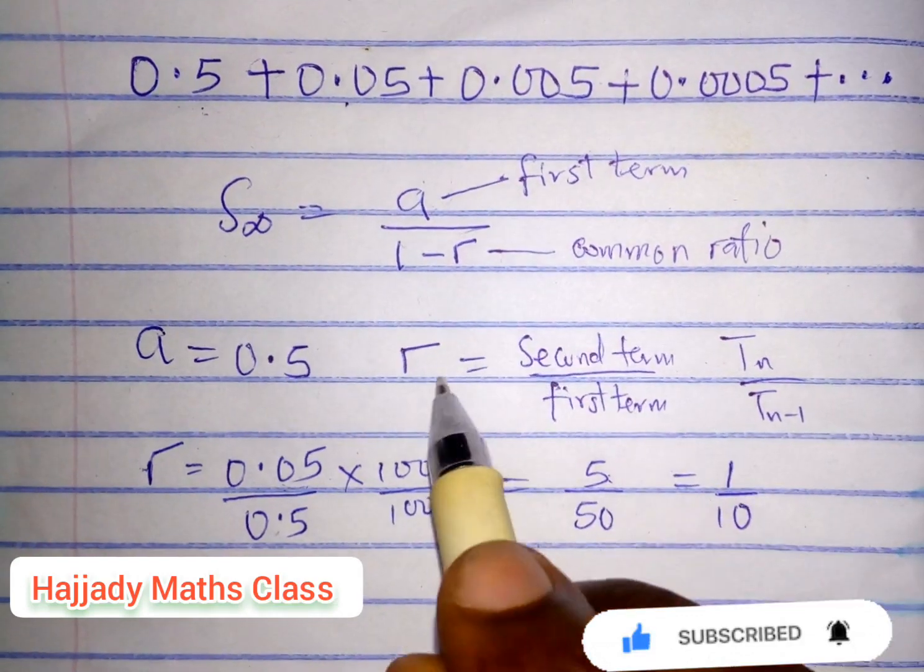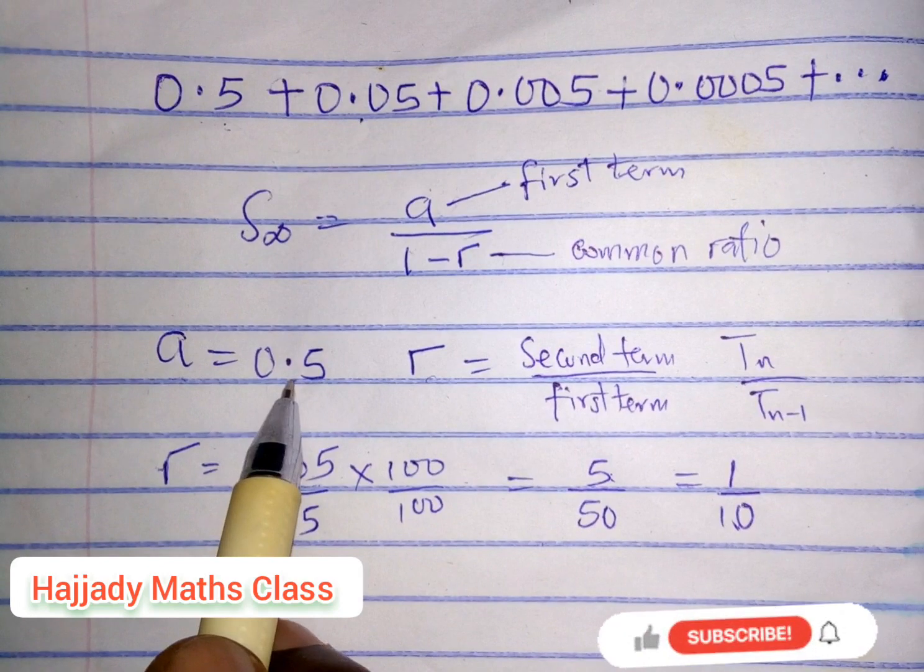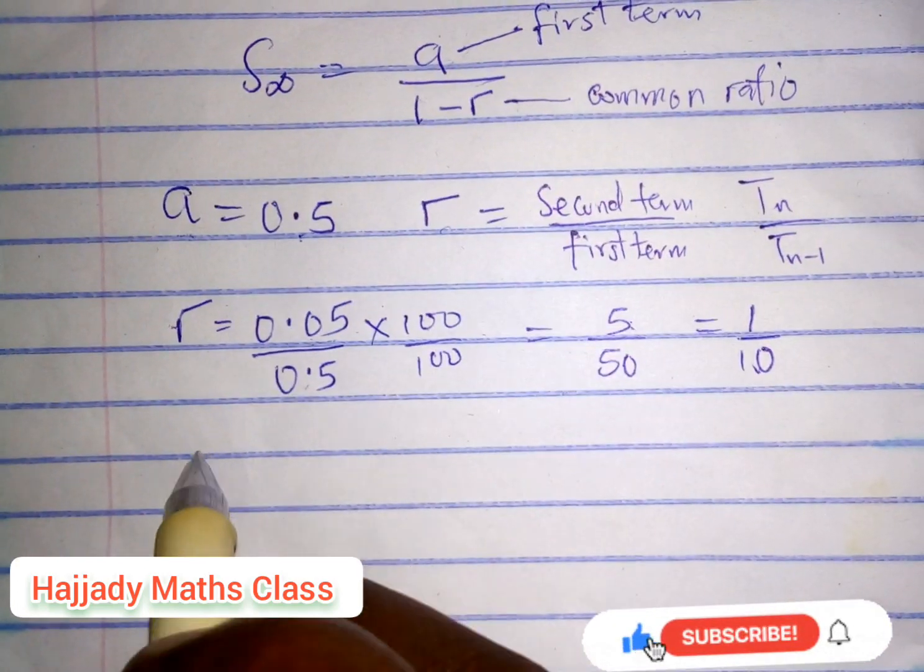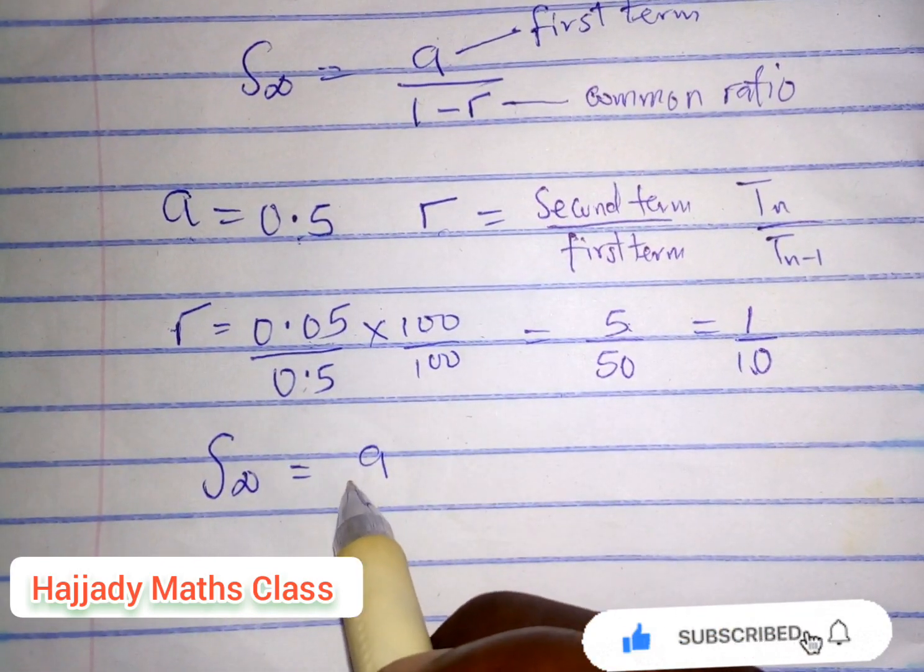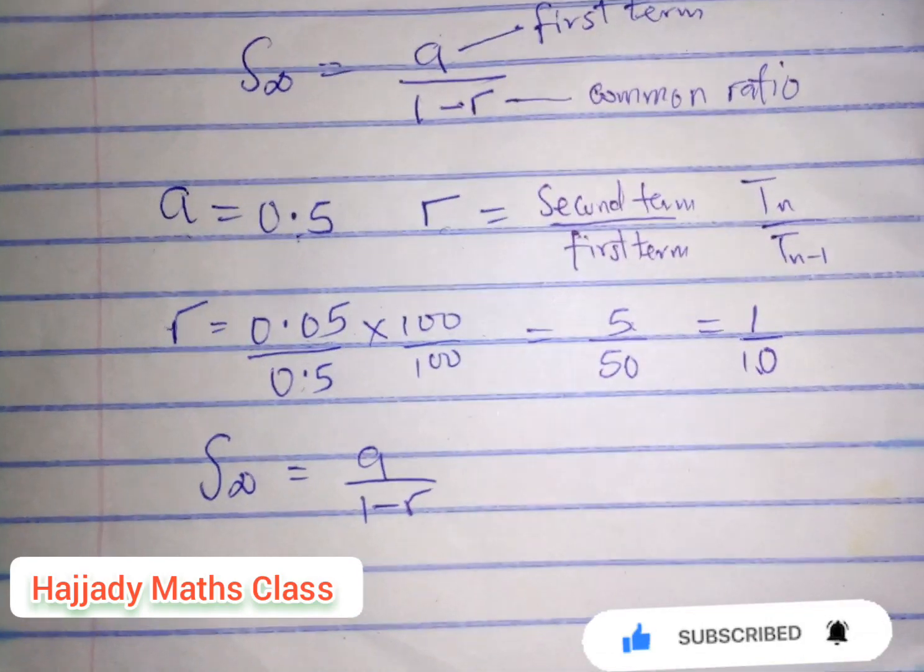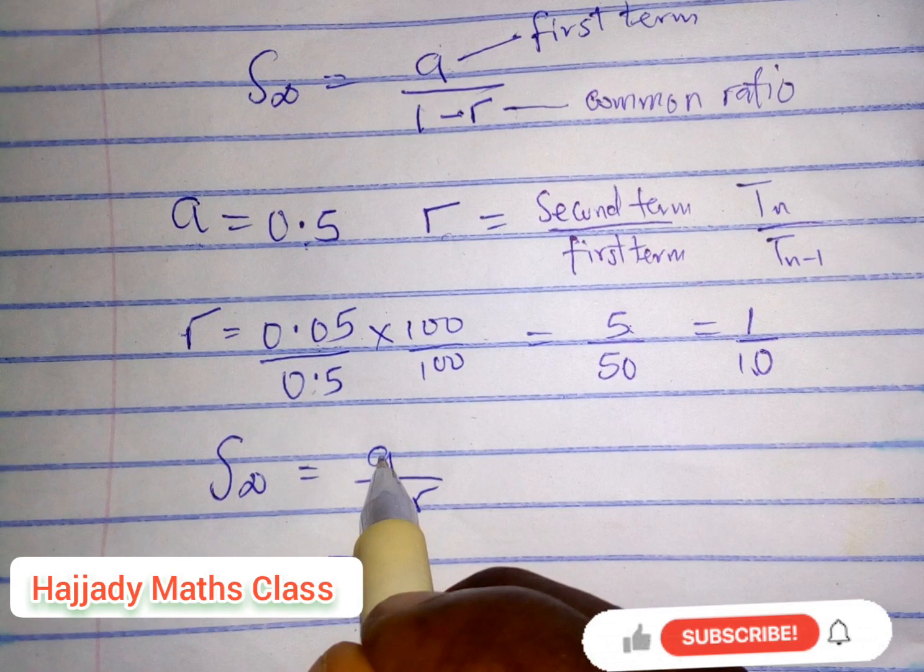Now we've gotten our common ratio to be 1 over 10 and our first term to be 0.5. Now implementing this in our formula, we have sum to infinity equals a over 1 minus r.